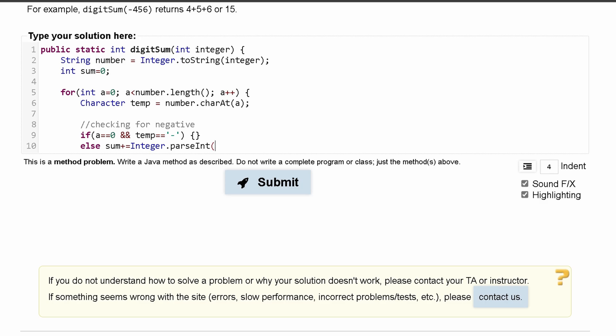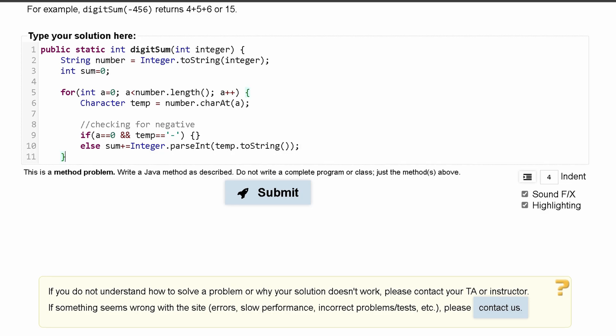So we have to actually make this character a string, because Integer.parseInt only works with a string, not a character. So we're going to do temp.toString to convert it to a string. We can close this in. That's going to be it for our else statement. We can close our for loop.